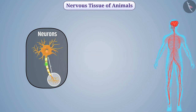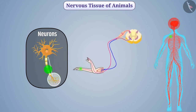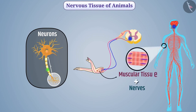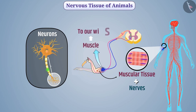Nerves transmit nerve impulses to the brain or spinal cord. The brain or spinal cord takes a decision to respond appropriately. Nerves arising from the brain or spinal cord conduct this information to muscular tissue, causing movement of the muscle tissue. In this way, with the help of nerve impulse, we can move muscles according to our wish.